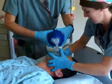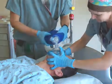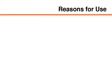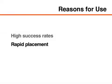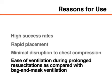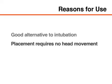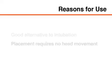Use of the laryngeal mask airway instead of bag and mask ventilation during CPR has led to fewer events of pulmonary aspiration. The reasons for LMA placement during CPR include high first-time success rates, rapid placement by both novices and experts necessitating minimal disruption of chest compressions, ease of ventilation during prolonged resuscitations, a good option when tracheal intubation is difficult or failed, and placement without head movement in patients with potential cervical spine instability, such as those with traumatic injuries or rheumatoid arthritis.